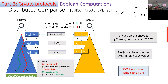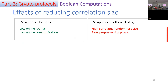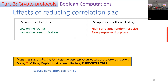We have seen how to compute the DCF function. Everything about FSS protocols was great — excellent online communication and rounds. The drawback is correlation size. Why should we care about this size? First, whether it's the dealer generating it or done through secure two-party computation, larger key size means more communication and a more expensive pre-processing phase. Second, as we will see later, even the online phase is affected by larger key size — not on CPUs, but when you port to GPUs this actually becomes the bottleneck.